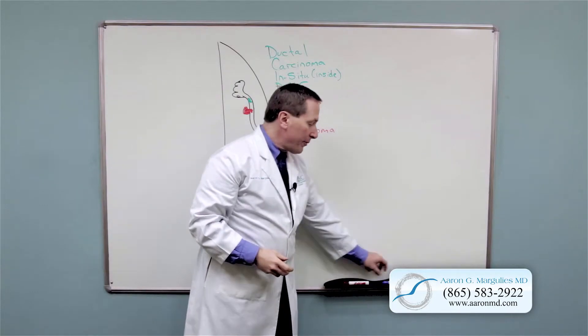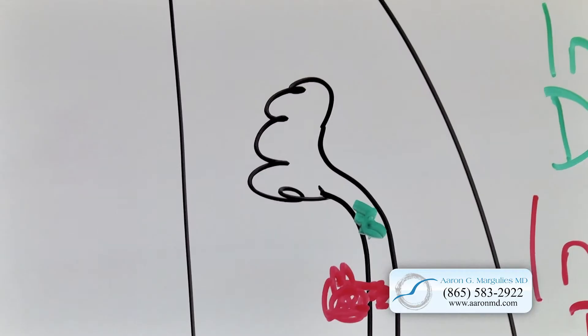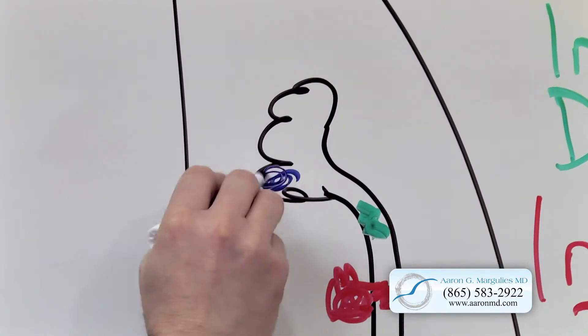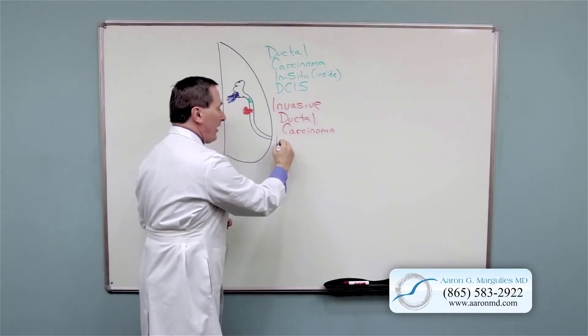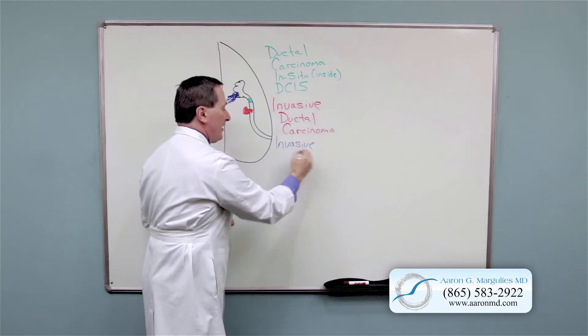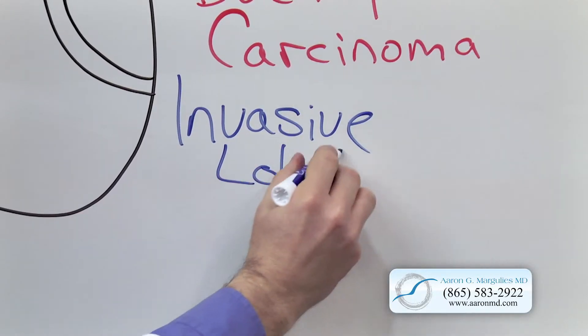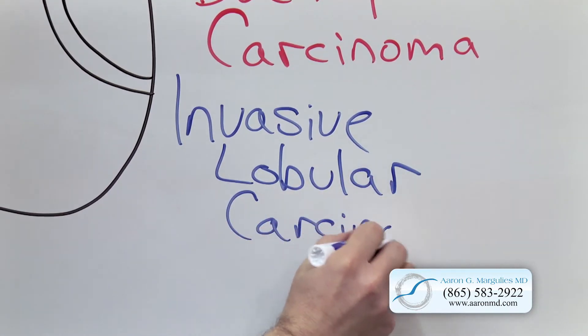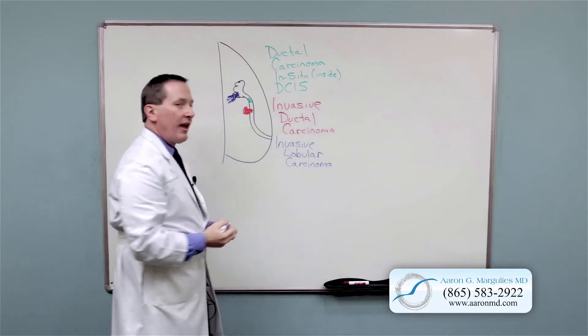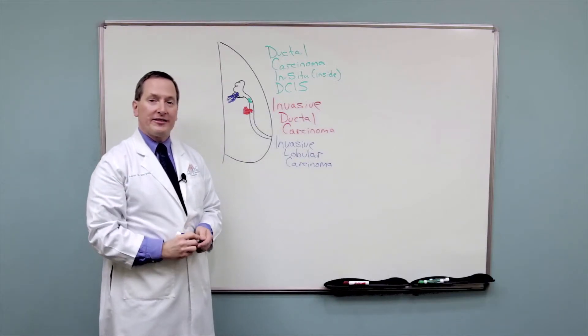But there is another form of breast cancer. And that is when these cells become cancerous in the lobule and then escape the lobule. And that is what we call invasive lobular carcinoma. And those are the three types of breast cancer.